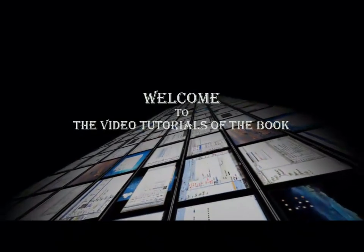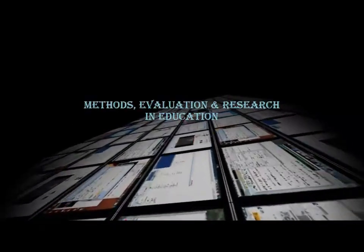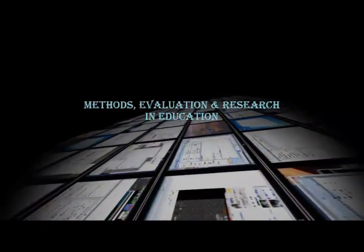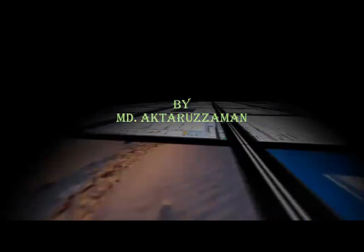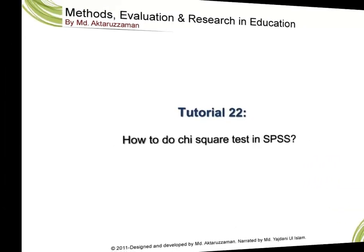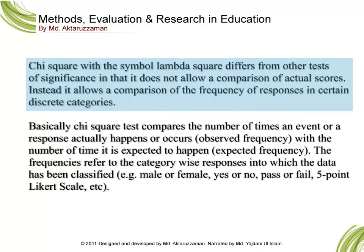Welcome to the video tutorials of the book Methods, Evaluation and Research in Education by Mohamed Akhtar Uzzaman. Today we are going to learn how to do the chi-square test in SPSS. Chi-square, with the symbol χ², differs from other tests of significance in that it does not allow a comparison of actual scores.